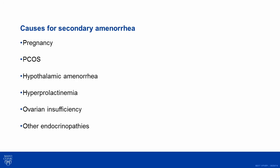As for pathological causes, probably the most common is PCOS, followed by hypothalamic amenorrhea. Hyperprolactinemia is another common cause, as is ovarian insufficiency, previously named primary ovarian failure. Other endocrinopathies can also be associated.